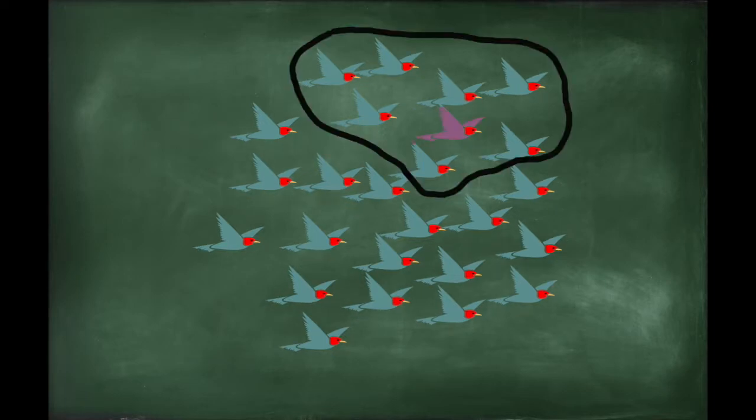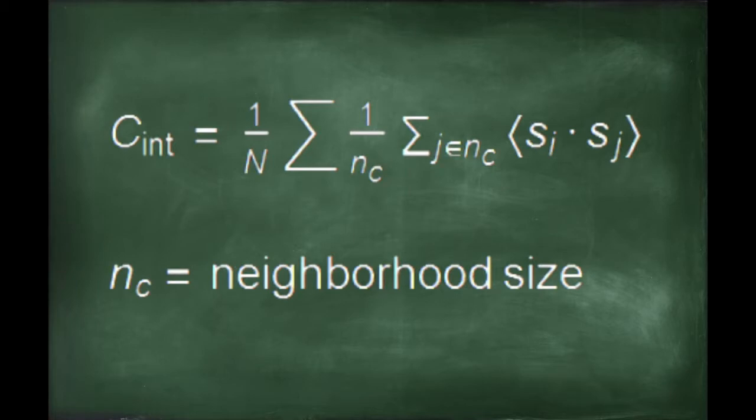From there, they calculate the average correlation from the neighborhood, where n is the local neighborhood size of each bird i. Note that j is only of the subset of birds that are within that neighborhood size, which means that this correlation factor is only calculated over that small subset of birds.